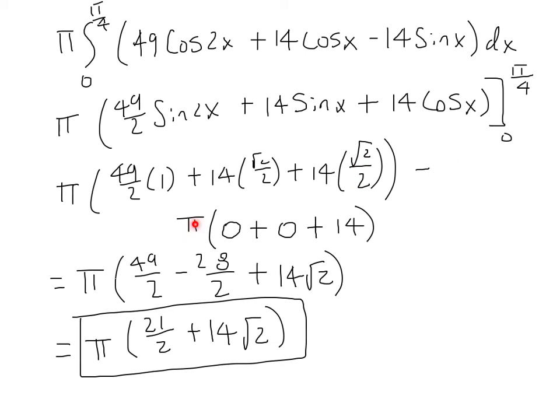We subtract the expression evaluated at x equals 0. At x = 0 the sine term gives 0, the sine of 0 is 0, and since cosine of 0 is 1 we get 14. Collecting terms we have pi times (49/2 minus 14 — which is 28/2 — plus 14√2). Combining those two terms gives pi times (21/2 + 14√2) as the final answer.